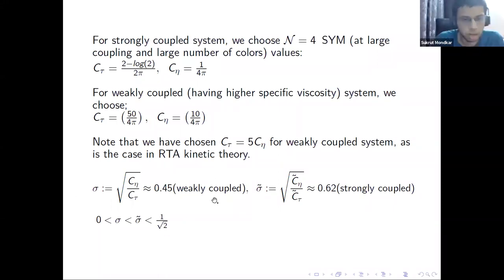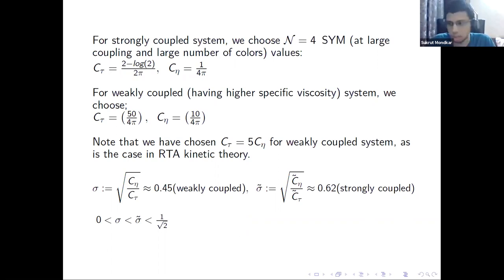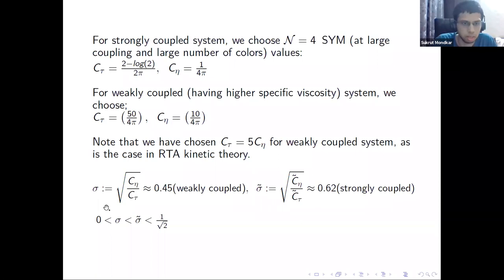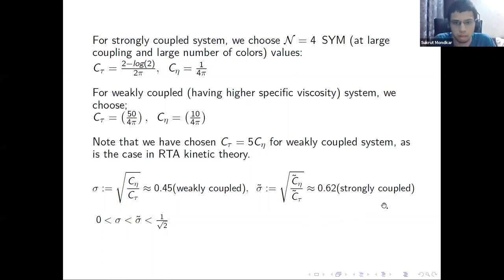The causality requirement is that the ratio sqrt(C_{tau_pi}/C_eta) must be less than 1/sqrt(2). For the weakly coupled system, sigma = 0.45, and for the strongly coupled system, sigma-tilde = 0.62, with sigma-tilde greater than sigma. As a convention, I denote the tilde system as strongly coupled and the non-tilde as weakly coupled.